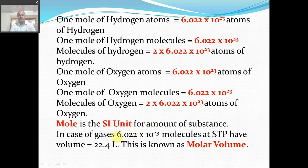In case of gases, if we take Avogadro number of molecules — 6.022 × 10²³ molecules — then the volume of these molecules at STP is 22.4 liters. STP stands for standard temperature and pressure: temperature is 273 Kelvin (0°C) and pressure is 1 atmosphere. This volume is called molar volume. Molar volume is the volume of one mole of gas — meaning Avogadro number of molecules of gas at STP.